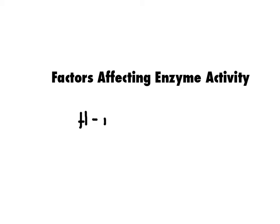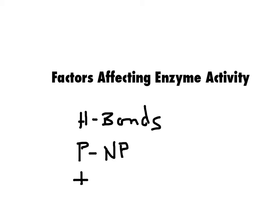Remember that all enzymes are made out of protein, so some of the same factors that can mess up a protein's three-dimensional shape are going to affect enzyme activity because they're going to change the 3D shape of the enzyme. Enzymes are proteins, so they're mostly held together with hydrogen bonds, polar-nonpolar interactions, ionic interactions, and acid-base interactions. Anything that plays with these factors can possibly end up changing the ability and the speed at which an enzyme goes through its reactions.